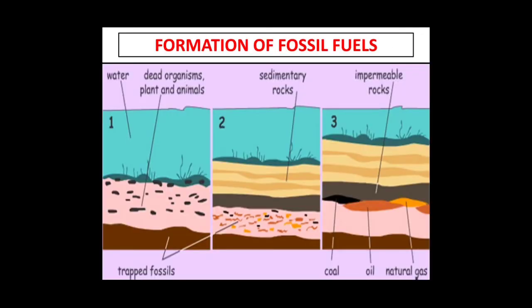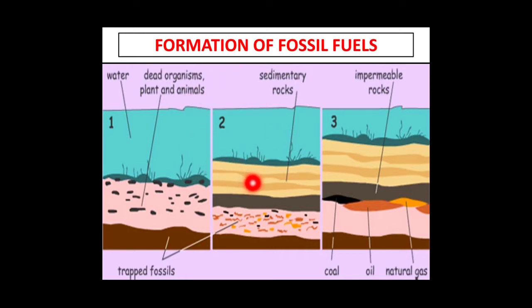In the first stage, you can see sediments here. The black dots are actually fossils — dead remains of plants and animals. When rivers flow down, they carry sediments mixed with dead remains of plants and animals to low-lying areas. In the second stage, there is an upper bed and a lower bed of sediments, and between them the fossils are actually trapped.